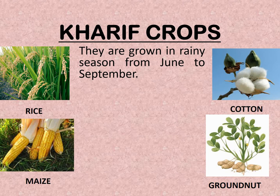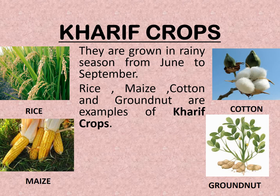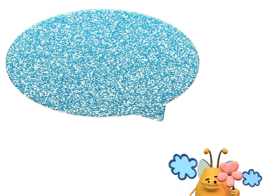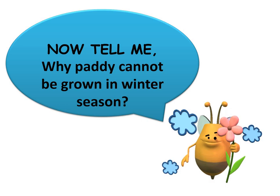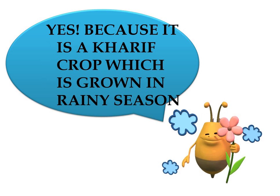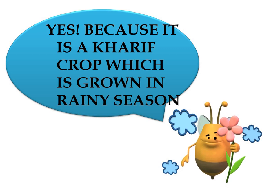Kharif crops are grown in rainy season from June to September. These crops are also called rainy crops. Some examples of Kharif crops are rice, maize, cotton, and groundnut. Why can paddy not be grown in winter seasons? Because it is a Kharif crop which is grown in rainy season.